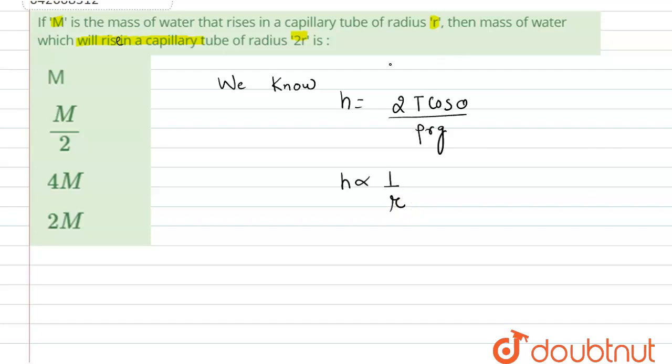So now it is said that if m is the mass of water that rises in the capillary tube of radius r, then what mass of water will rise in the capillary tube of radius 2r. So now we have to find out height.